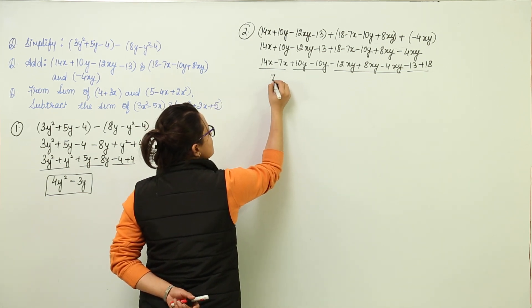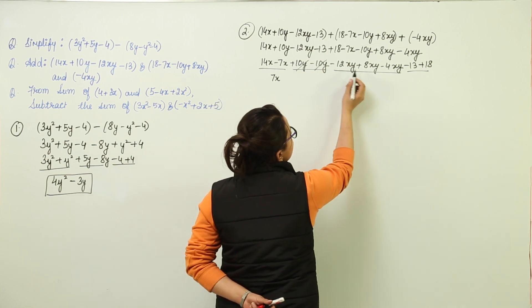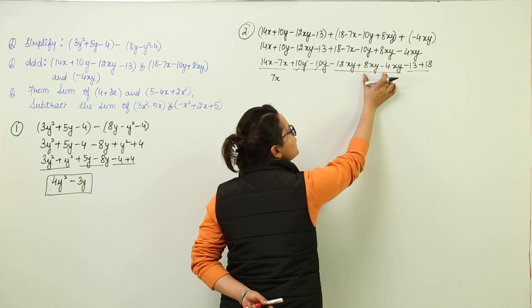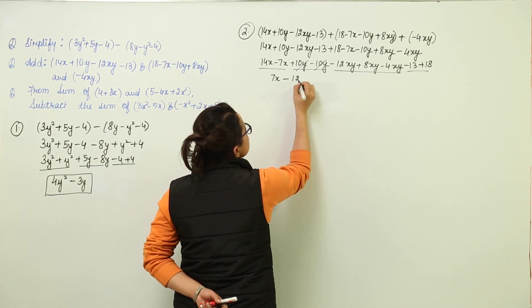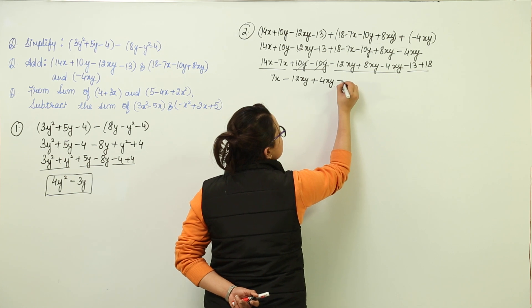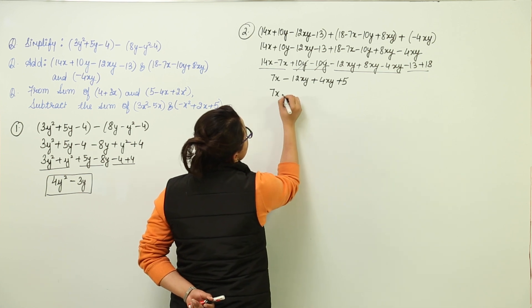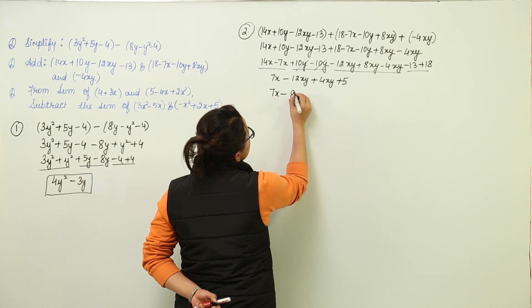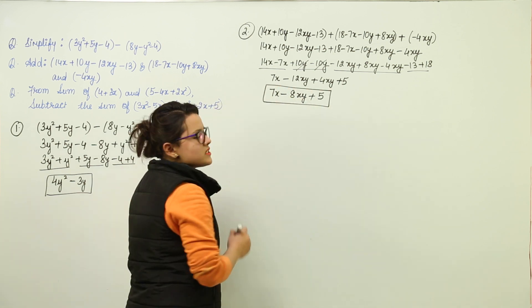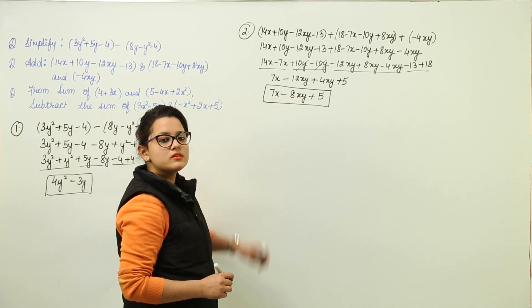Solving: 14x minus 7x gives 7x. 10y minus 10y gives zero. For the xy terms: minus 12xy plus 8xy gives minus 4xy, and minus 4xy plus 4xy — wait, 8 minus 4 gives 4 — so minus 12xy plus 4xy gives minus 8xy. And minus 13 plus 18 gives plus 5. So the final answer is 7x minus 8xy plus 5, with no further like terms to simplify.